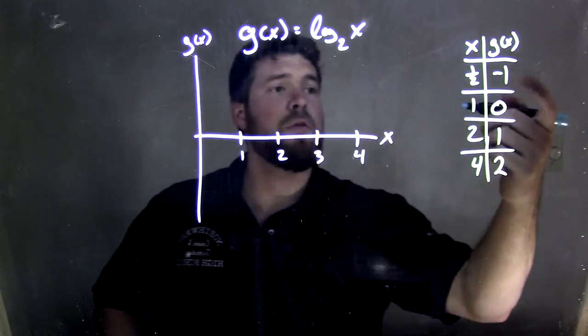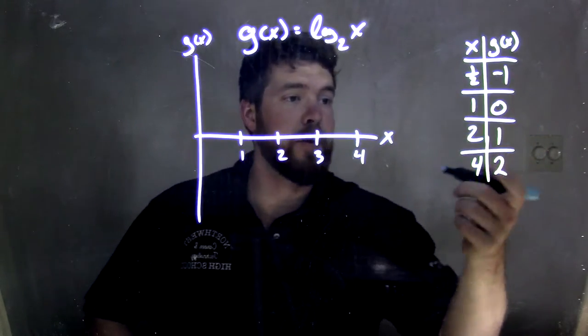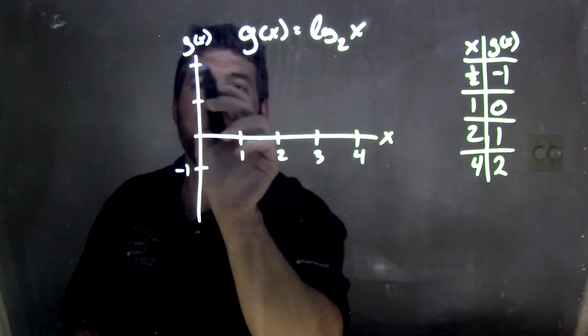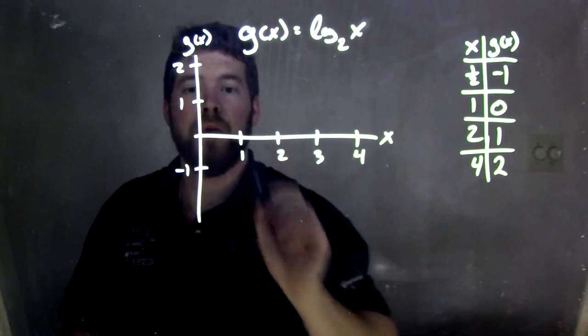And my height values goes from, at least what I have here, from negative one to positive two. So let's go put negative one right here. And we have one and two. Right there.